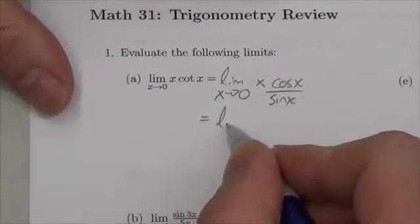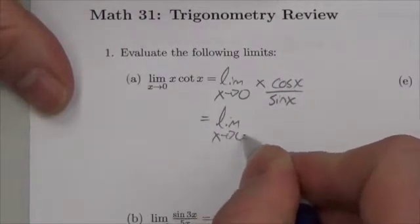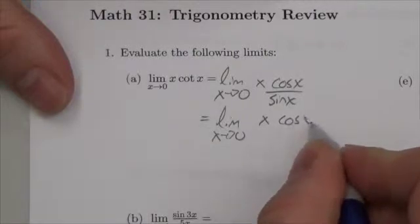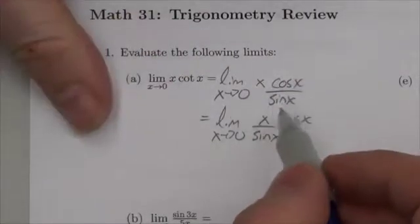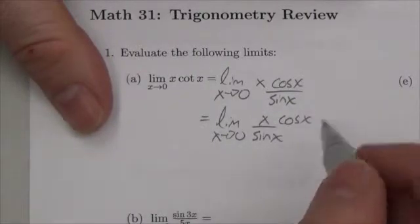Now, this is equal to the limit as x approaches zero of... And all I'm going to do here is just shuffle around terms a little bit. Because it's x times the cos over sine, this is like x over sine times cos.